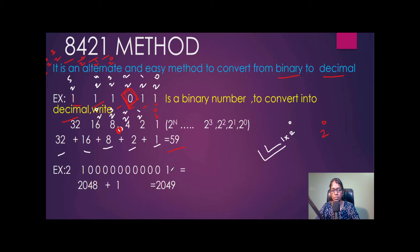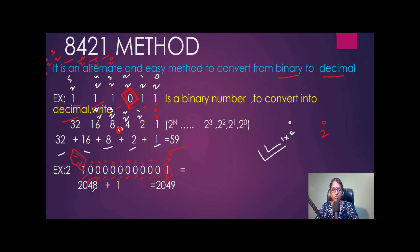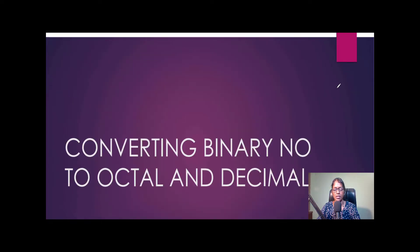This shows how helpful the 8421 method is for longer binary values. For example, take 1 0 0 0 0 0 0 0 0 0 0 1 — there are zeros in between, so no need to calculate those. The first 1 is 2 to the power 0, which is 1, and the last 1 is 2 to the power 11, which is 2048. So the equivalent decimal value is 2048 plus 1, which equals 2049.